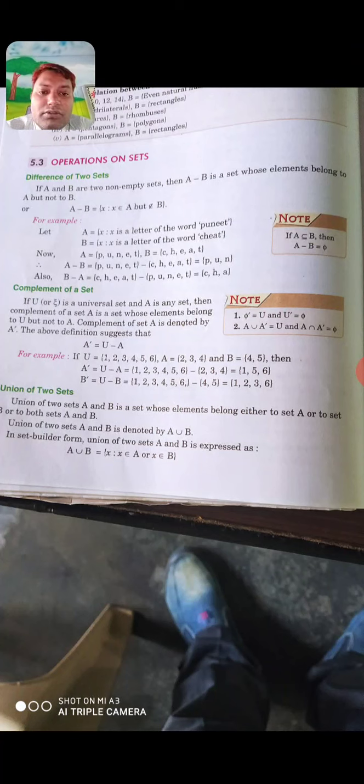So note that here student, if A is a subset of B then A minus B is equal to 5.